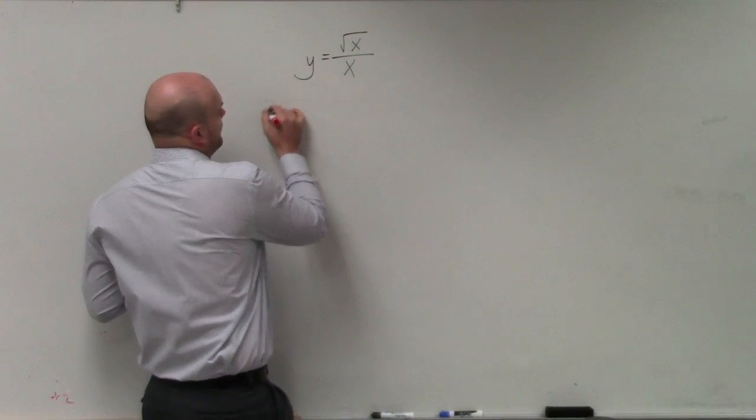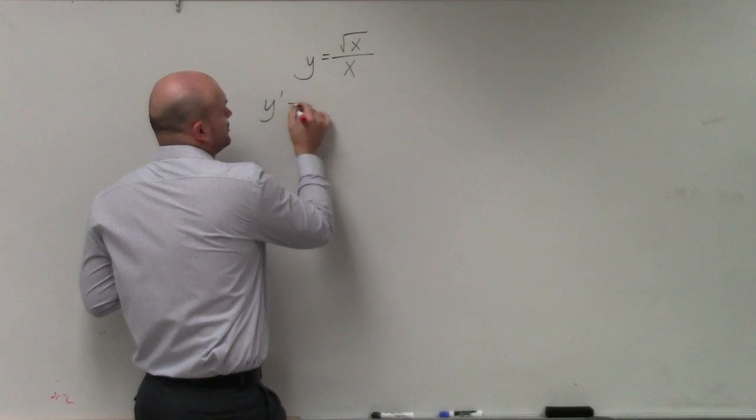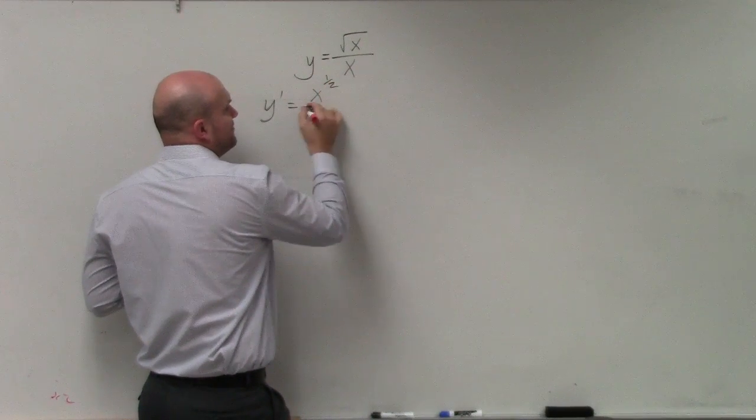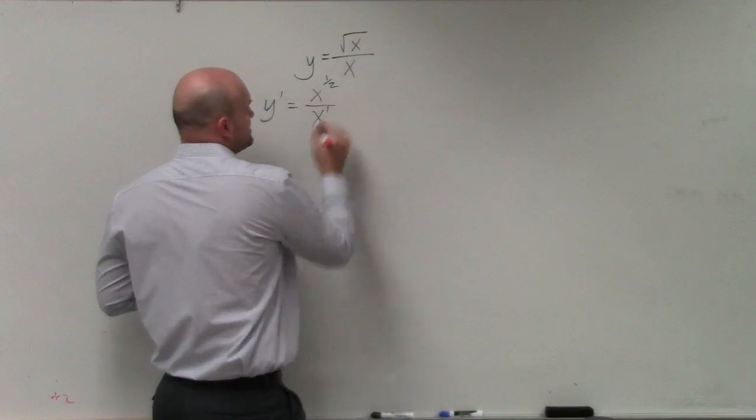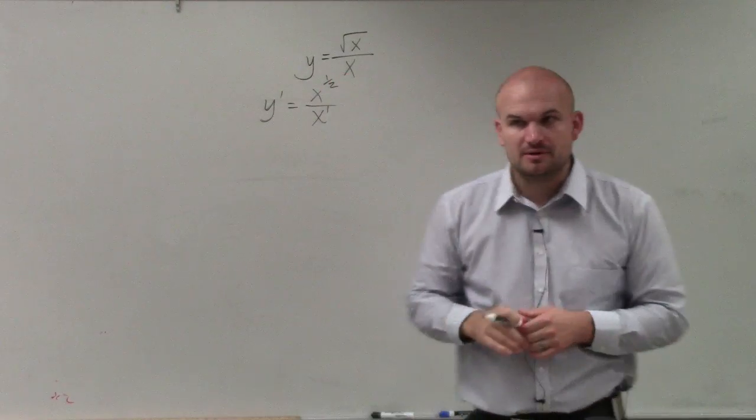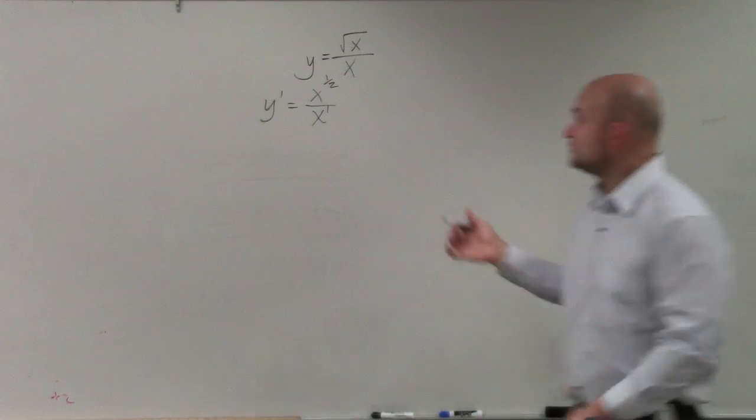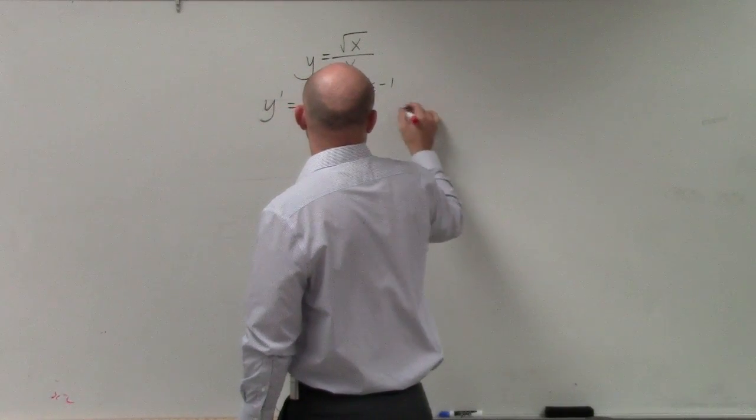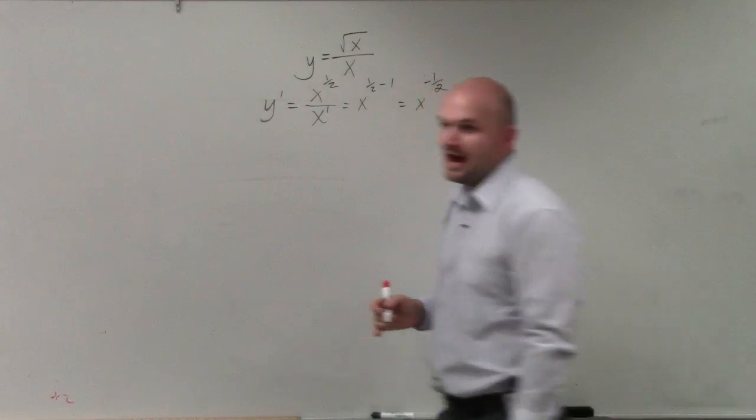So if we're looking for the derivative here, we could actually simplify this as 2x to the 1 half power over x, you could think about that, to the first power. Well now, if you remember the rules of exponents, that's really x to the 1 half minus 1, which equals x to the negative 1 half.